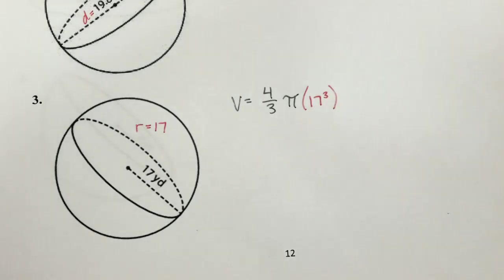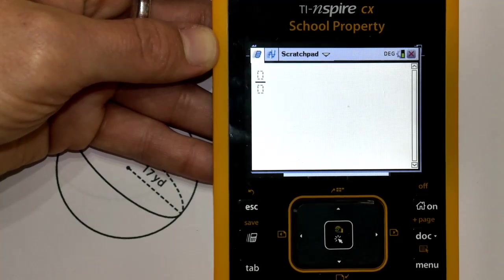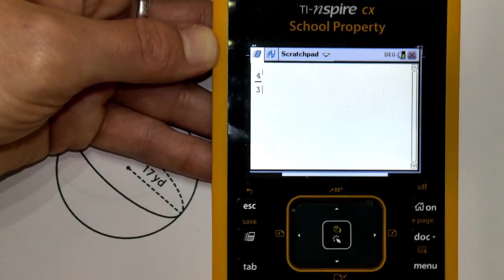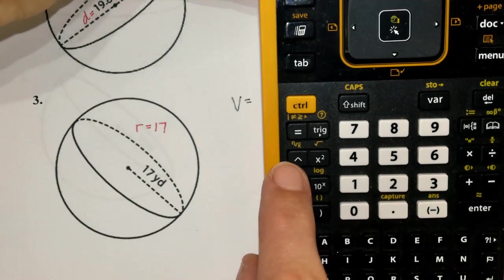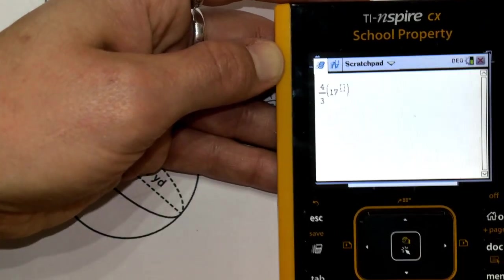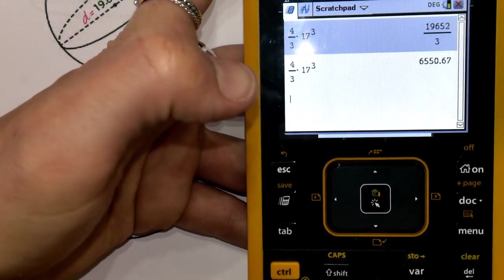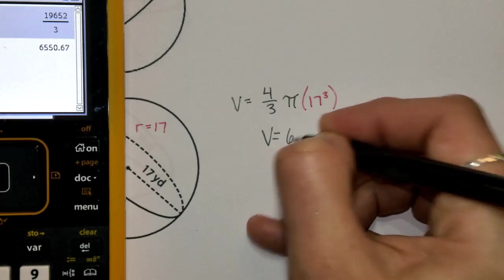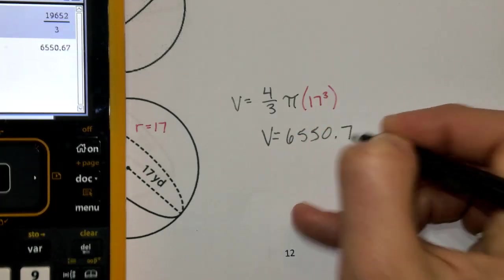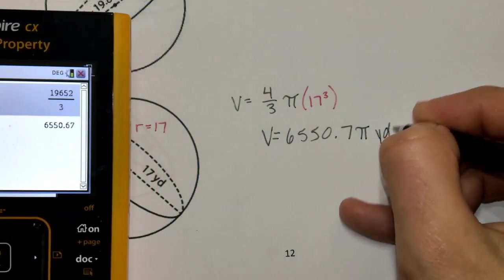In the calculator, type in four-thirds using ctrl-divide, scroll out of the fraction, open parentheses, enter 17, and use the carrot arrow up to get to the exponent, then type 3. Press ctrl-divide to get the result. Rounded to the nearest tenth, in terms of pi we get 6,550.7π — the 7 tells us to round the 6 up. Don't forget your pi symbol, and the units are yards cubed.